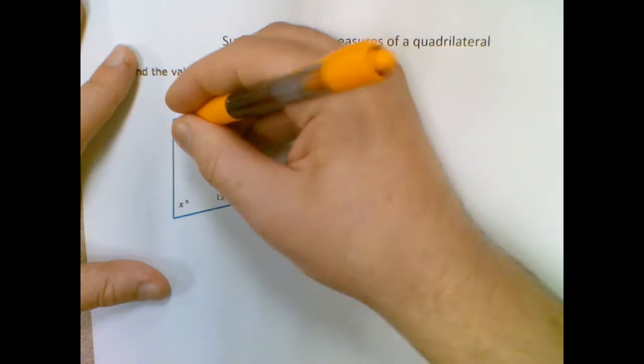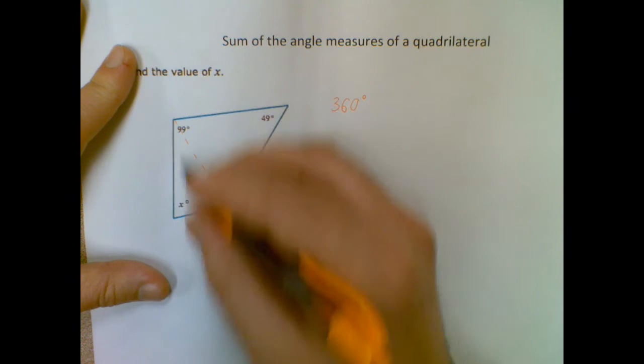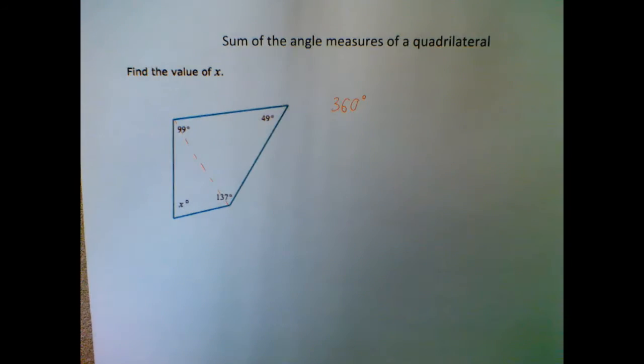If you kind of imagine here, we cut this into two triangles, each one's 180, so there's two of them, so 180 times 2 is 360.